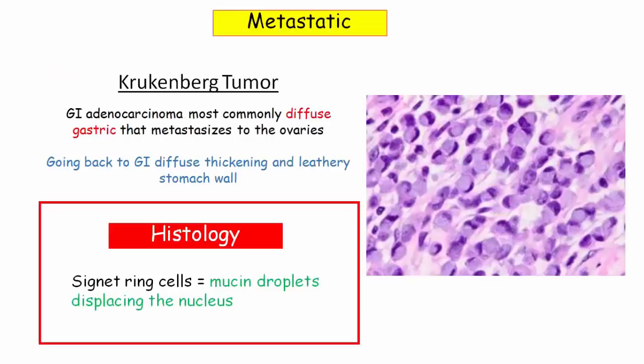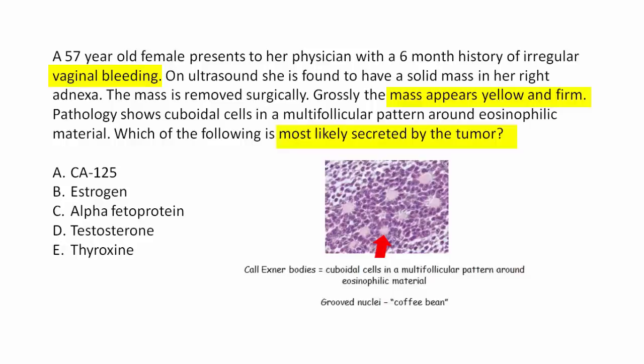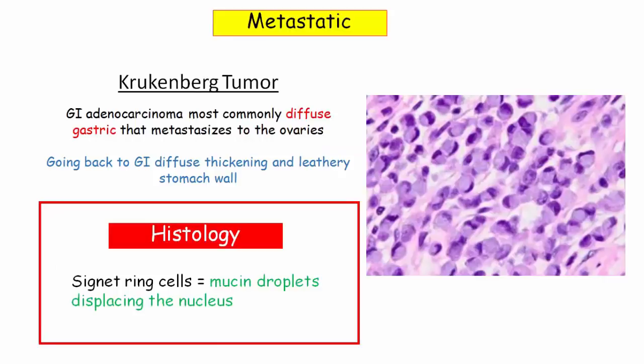Last but not least is a very popularly tested metastatic tumor of the ovary: the Krukenberg tumor. Krukenberg tumor is generally a GI adenocarcinoma, most commonly diffuse gastric carcinoma, that metastasizes to the ovary. This diffuse gastric carcinoma causes diffuse thickening and a leathery texture to the stomach wall. The pathology is very classic — signet ring cells, described as mucin droplets displacing the nucleus.